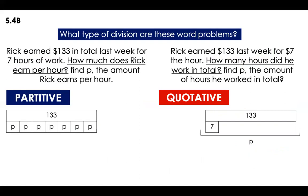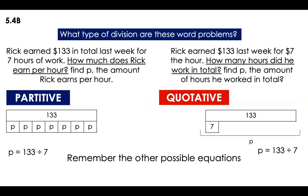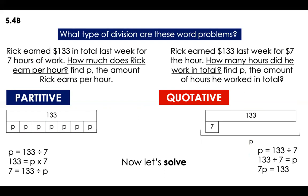Now let's create an equation for each. In the first one: 133 divided by 7. In the other one: also 133 divided by 7. So yes, it's going to be the same answer. Remember we have other possible equations. If you're doing division, you can use the inverse: 133 is equal to P times 7; 7 is equal to 133 divided by P; 133 divided by 7 equals P; and 7P — that means 7 times P — is equal to 133.